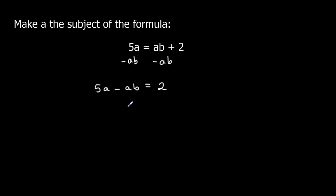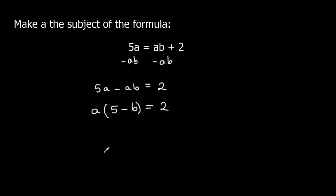I don't want two terms of 'a', I just want one 'a' term. So what I can do is factorize 'a' out of the left side of my equation. If I take 'a' on the outside: a times 5 makes 5a, a times b makes ab. So I've got 'a' on the outside and '5 minus b' inside the brackets, so that says a times (5 minus b).